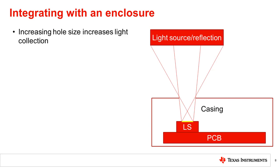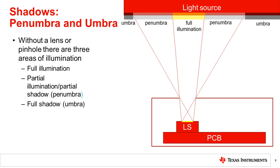To increase the light collection, the hole is typically made larger. The size of the hole, called the aperture, and the distance between the sensor and the hole determine the light rays that illuminate the sensor. We can see that increasing the aperture, or moving the sensor closer to the hole, will increase the angle of the lines. When using a hole larger than the ideal pinhole, and without a lens, we can see the lines form three different regions of illumination labeled on the diagram shown on the right.